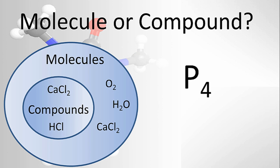Something like P4, we have four phosphorus atoms chemically bonded. Two or more elements gives you a molecule. But in this case, they're all the same. We don't have different elements. Therefore, it can't be a compound. P4 is just a molecule.